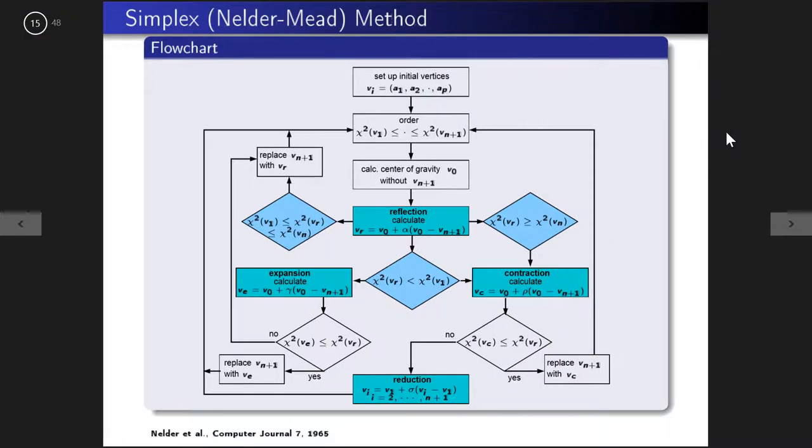The simplex method was used behind the scenes when you solved the integrating sphere problem. A simplex is a geometric shape — one dimension greater than the number of parameters being sought. For two parameters, the simplex is a triangle; for three, it would be a tetrahedron. You set up initial vertices — for mu_A and mu_S', three pairs representing triangle vertices — and evaluate the chi-squared at each vertex and order them.